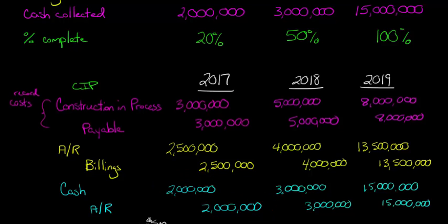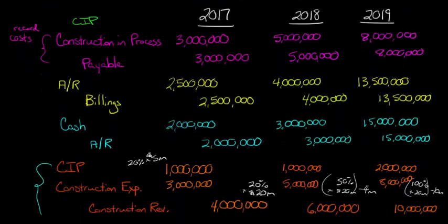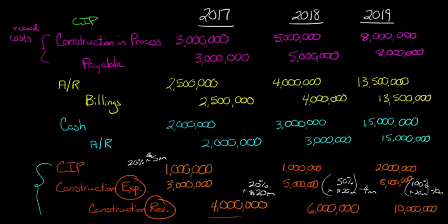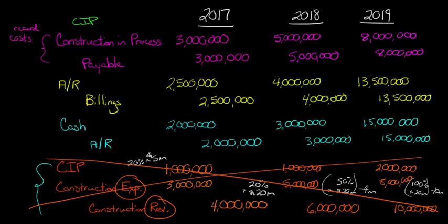Here's where the difference comes into play. Under the percentage of completion method, we also made an entry to record the ratable portion of revenue and expense each period — recognizing some revenue in 2017, some in 2018, and some in 2019. The amounts were $4 million, $6 million, and $10 million respectively. Under completed contract, we're going to have $20 million all in 2019 when the contract is done, rather than $4, $6, and $10 million spread across years. So those periodic revenue and expense entries are not required under the completed contract method.